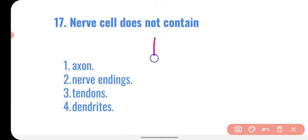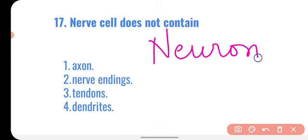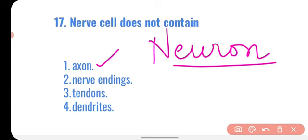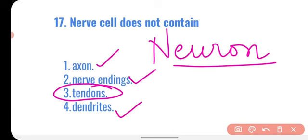Question seventeen: a nerve cell does not contain — the nerve cell, also called a neuron, is the functional and structural unit of nervous tissue. A neuron consists of an axon, nerve endings, and dendrites. It does not have a tendon, which is a type of connective tissue. So the correct option is tendon.